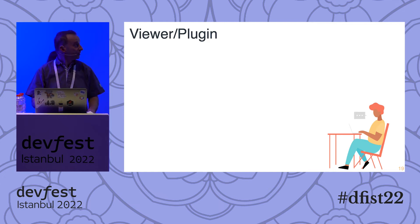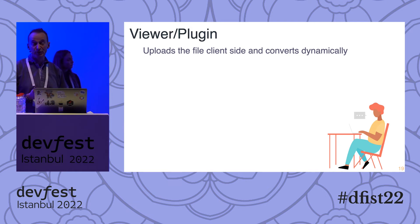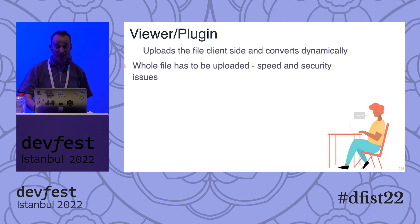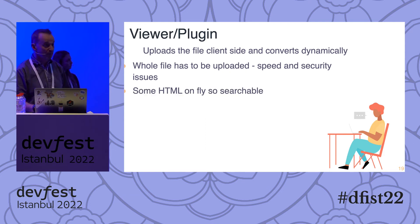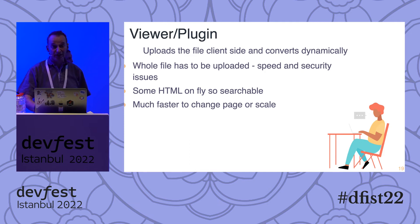There are three fundamental ways to handle this. Leaving the system defaults also doesn't integrate it very well into your web apps, and it doesn't protect the content. One obvious solution is a viewer plugin — what you're doing is uploading the file on the client side and converting it dynamically. Chrome, Safari, and Firefox all have their own internal PDF viewers. The issues with this are potentially the whole file has to be uploaded, which is a speed issue — if you have a 10,000-page document and only want to see the first page, you still have to upload the whole file. You also have potential security issues in that you're sending the file to the client each time. Some will generate HTML5 on the fly, making content searchable, but you can't deeply integrate the document. The big advantage is if you need to change pages or scale, it's much quicker because it's doing on-the-fly decoding on the client.